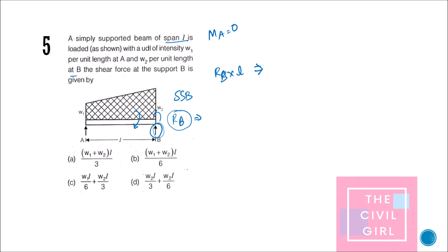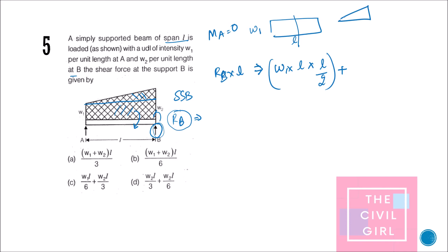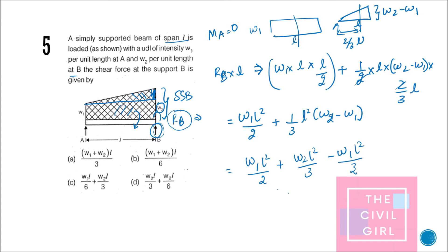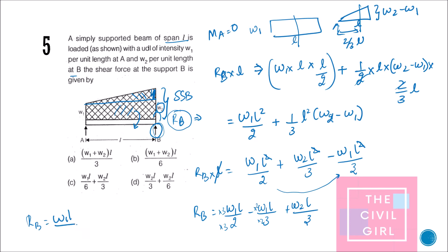Divide the trapezium into a rectangle and a triangle. The rectangle has intensity W1 over length L, with centroid at L/2, giving W1·L·(L/2). The triangle has intensity (W2 − W1) over length L, with centroid at (2/3)L from A, giving (1/2)·(W2 − W1)·L·(2L/3). Solving gives RB equal to W1·L/6 + W2·L/3. The answer is option C.